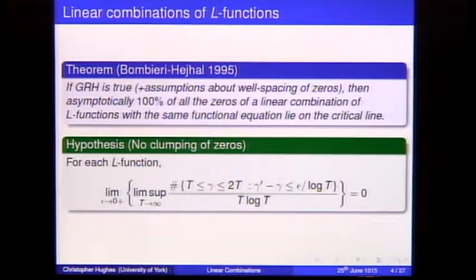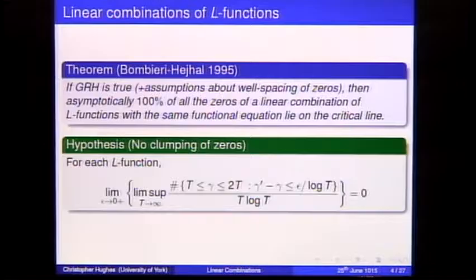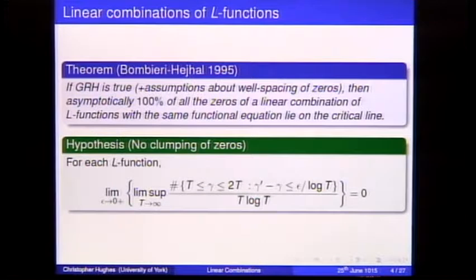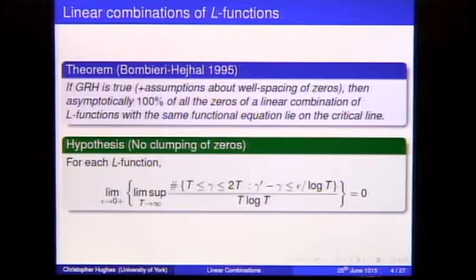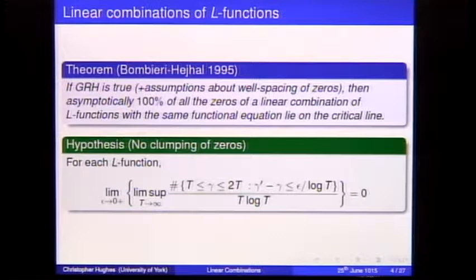Some zeros do lie off the line — absolutely, definitely. At MSRI in 1999, Hejhal spoke about zeros lying off the line, trying to count them, and Selberg spoke about zeros lying on the line for linear combinations without assuming GRH or any clumping assumptions. I'm not going to talk about that approach.